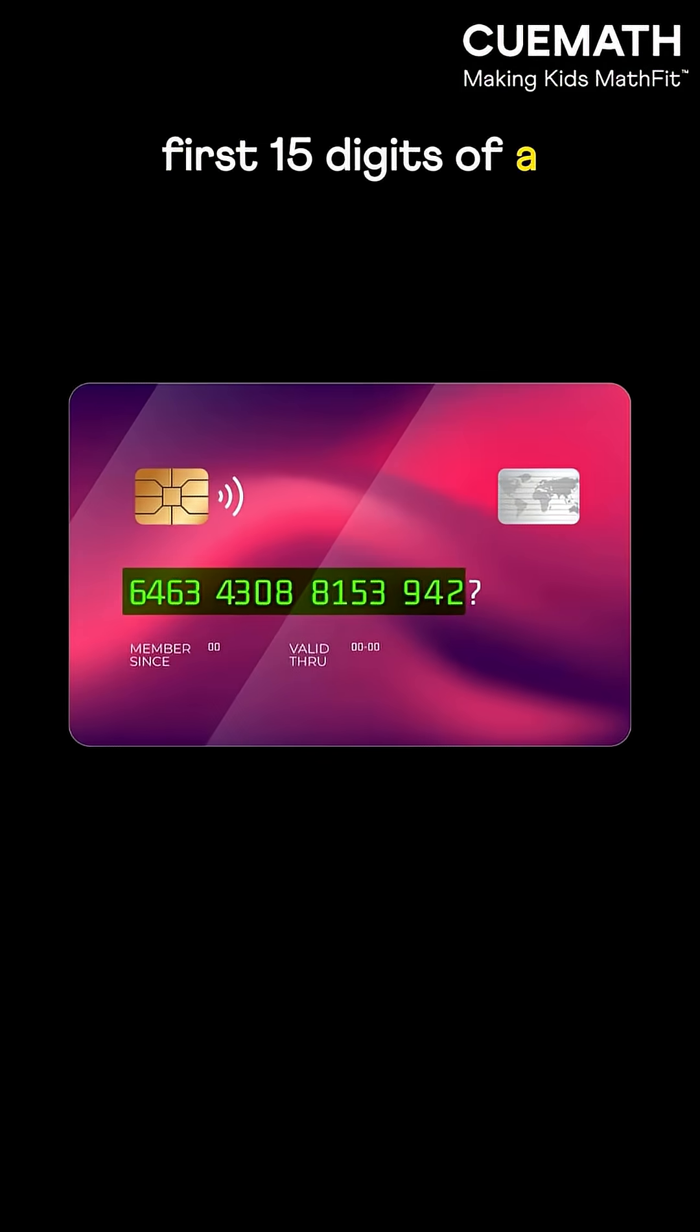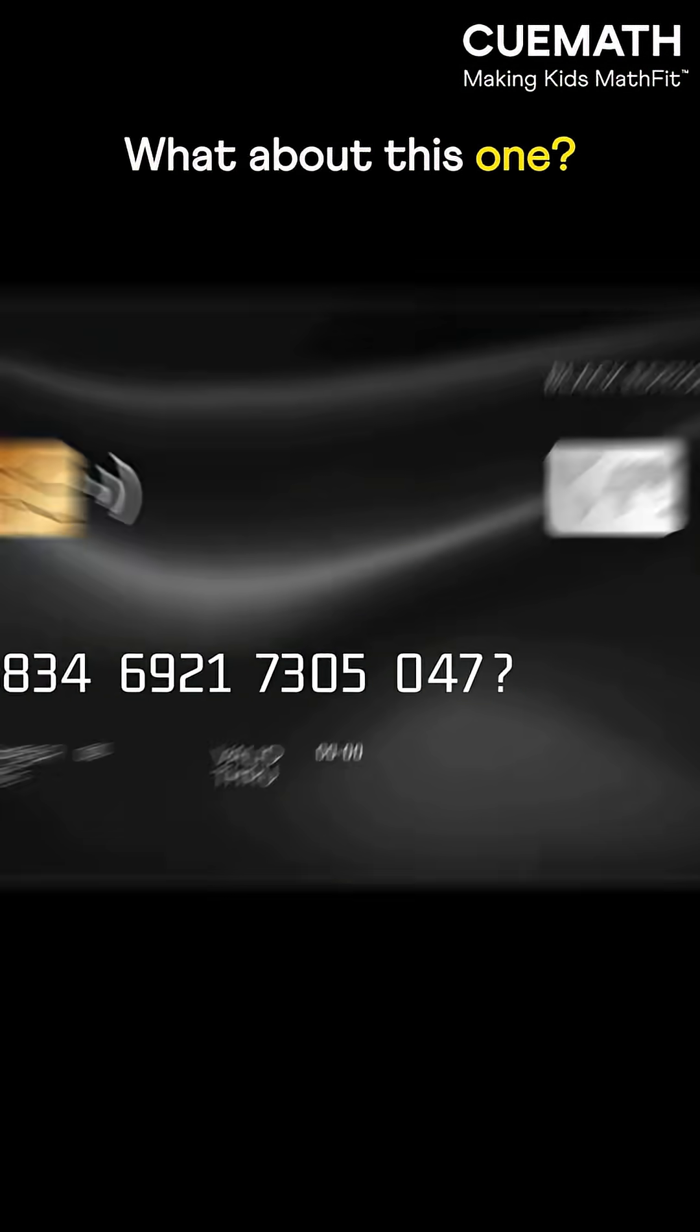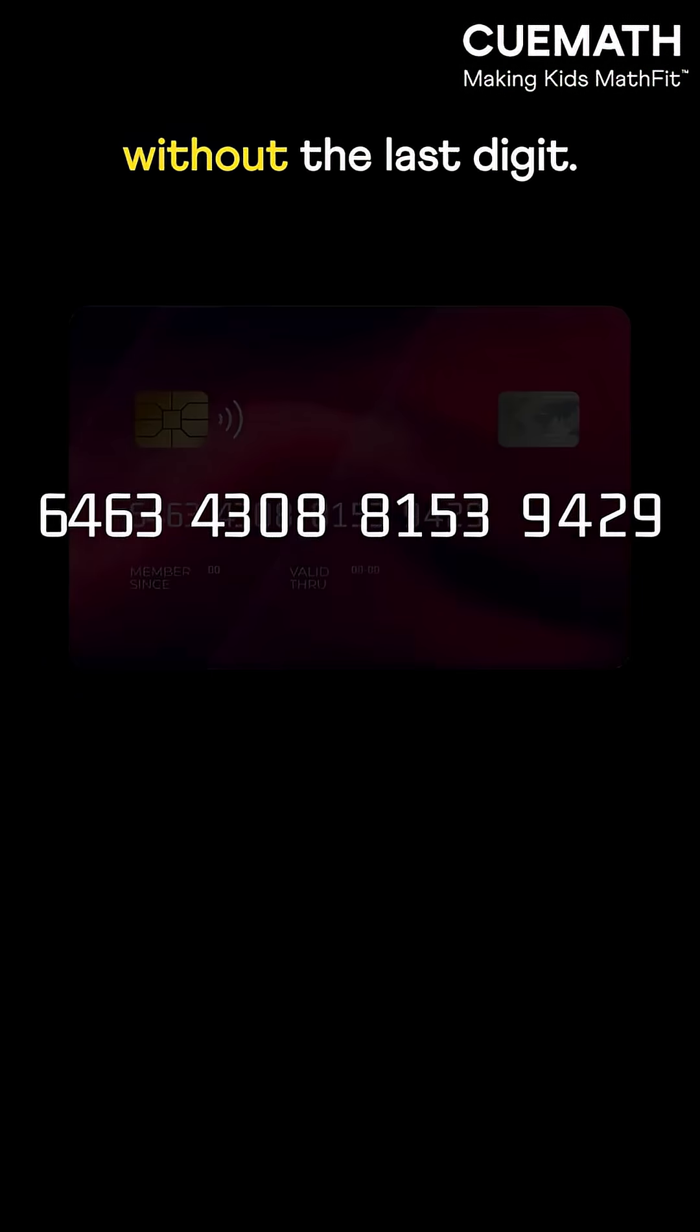If these are the first 15 digits of a credit card, the last one has to be 9. What about this one? It has to be 2. Spooky, right? No, it's math. Let's start with this number without the last digit.